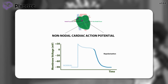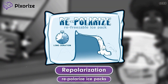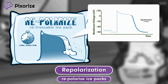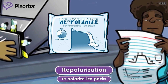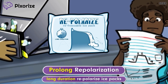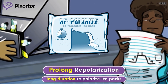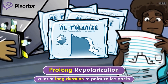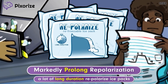Looking closely at the Repolarize ice pack, notice the graphic of a polar bear sliding down a mountain — the shape of the mountain resembles an action potential, and the bear sliding down the right side corresponds to repolarization. Importantly, these are long-duration ice packs that stay cold for an extra long time, symbolizing how Dofetilide and Ibutilide prolong repolarization. Since the gym is very hot, the worker has brought out a lot of these ice packs, representing how these drugs substantially — or markedly — prolong repolarization.